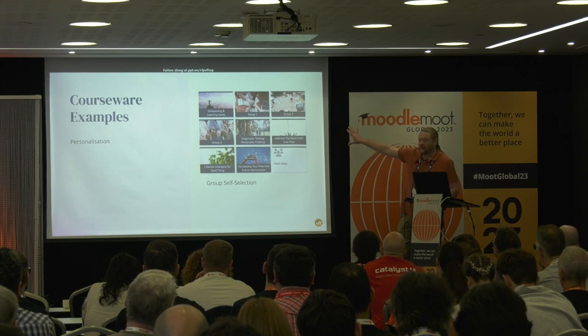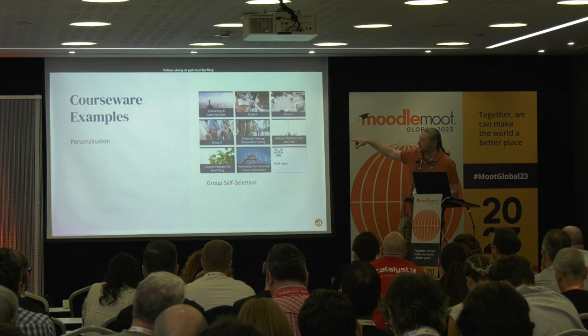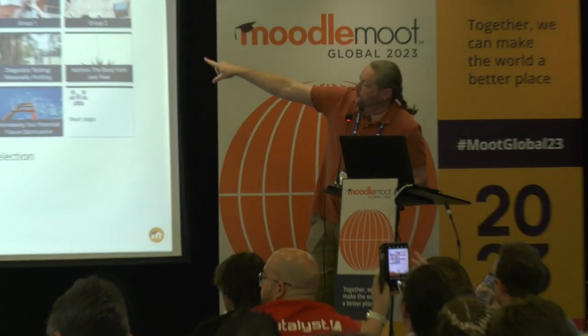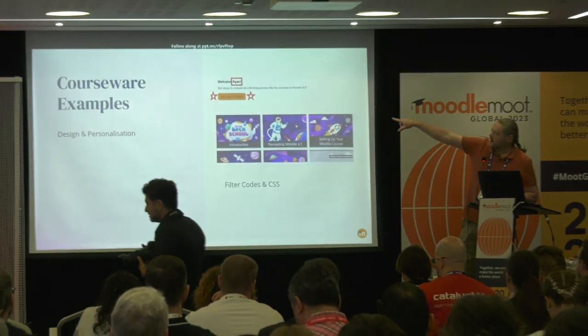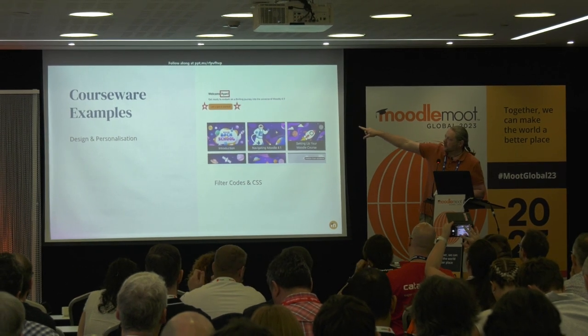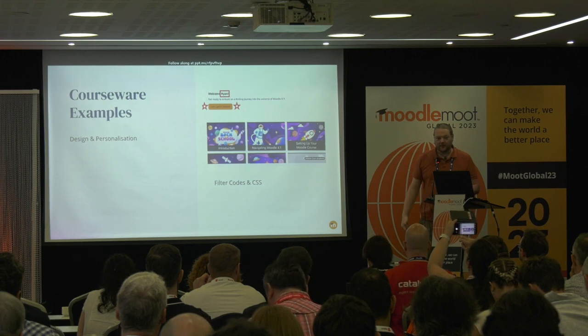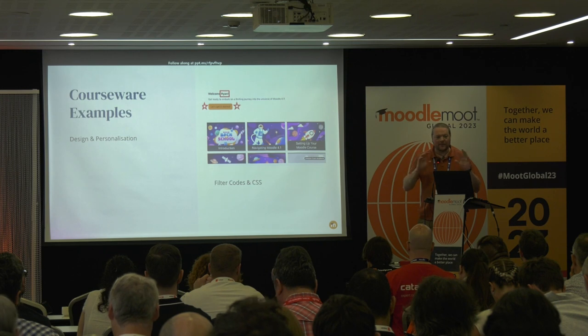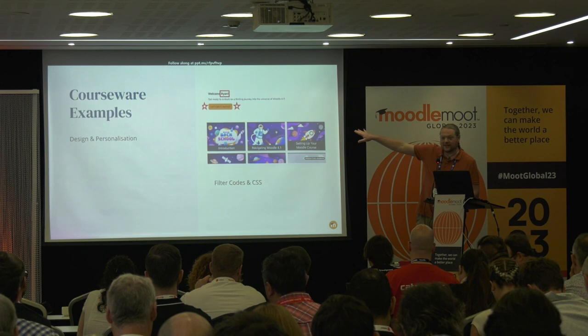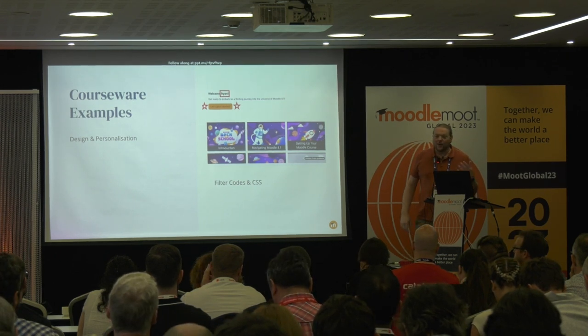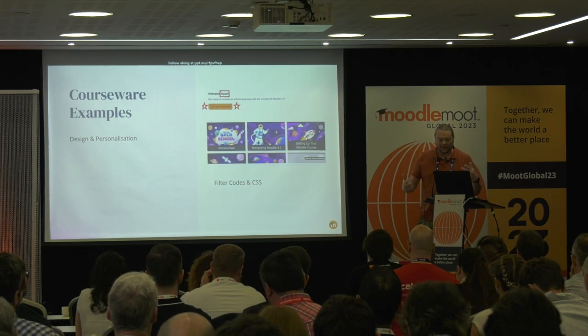For personalization, there was a lot of tiles format in the courseware. In the onboarding and learning goals section, there was a group self-selection where you select which group you want — group one, two, or three — and content would be available based on that selection. Each group was based on a different area you might be interested in as a learner. They also used filter codes to address the learner directly — filter codes can take user profile fields and insert them into text anywhere on Moodle — plus a basic CSS style button within the text editor that takes a plain text link and turns it into something that looks like part of the site.